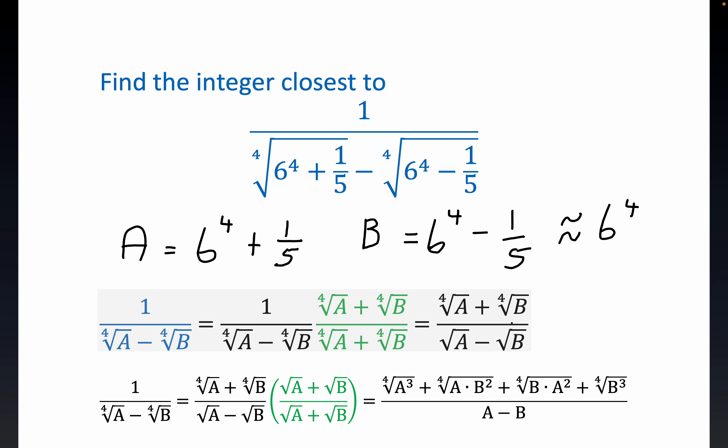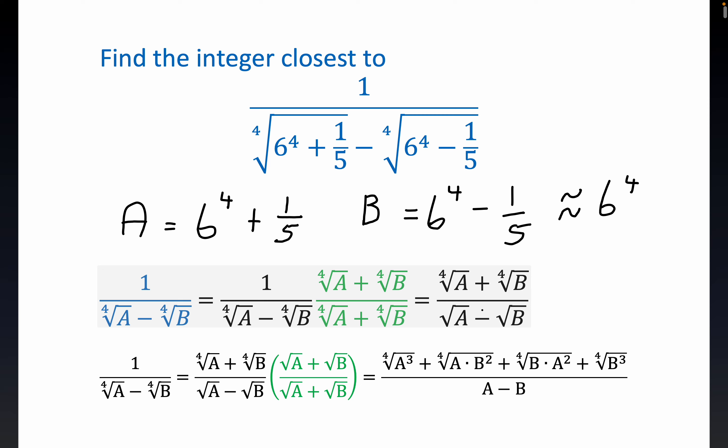I like the radical notation. A lot of you may prefer the rational exponent notation. But notice when we get to this position, we're again in a position to multiply through by the conjugate.